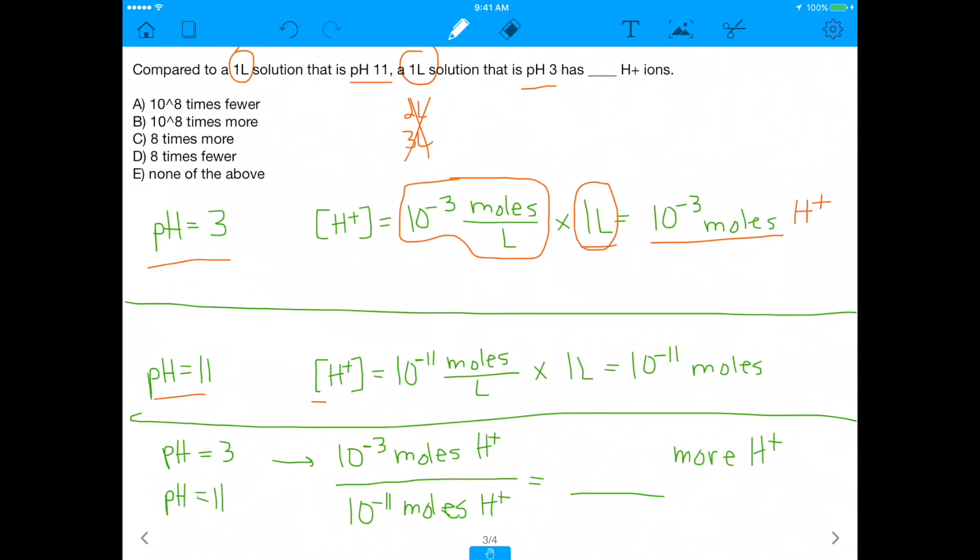Now, pH 11, you do the exact same thing. Remember, pH 11 means you have 10 to the negative 11 moles per liter, but you have 1 liter of that solution, because the question says so, which means you have 10 to the negative 11th moles of H+ in the pH 11 solution. So if you now put it all together, the pH 3 has 10 to the negative 3 moles of H+, and the pH 11 has 10 to the negative 11 moles of H+.